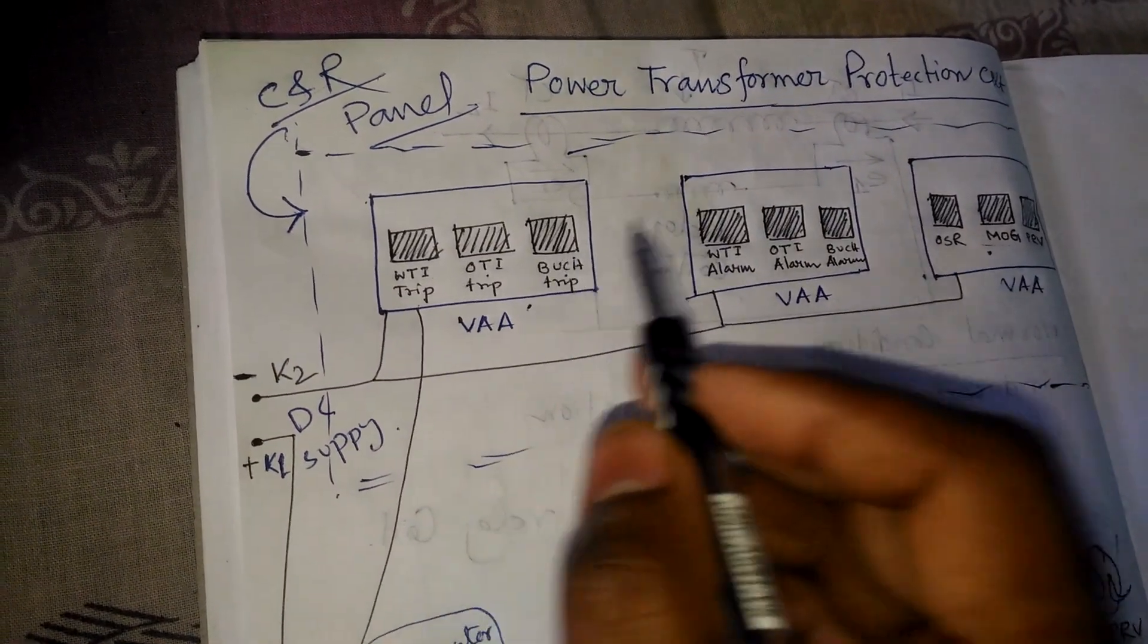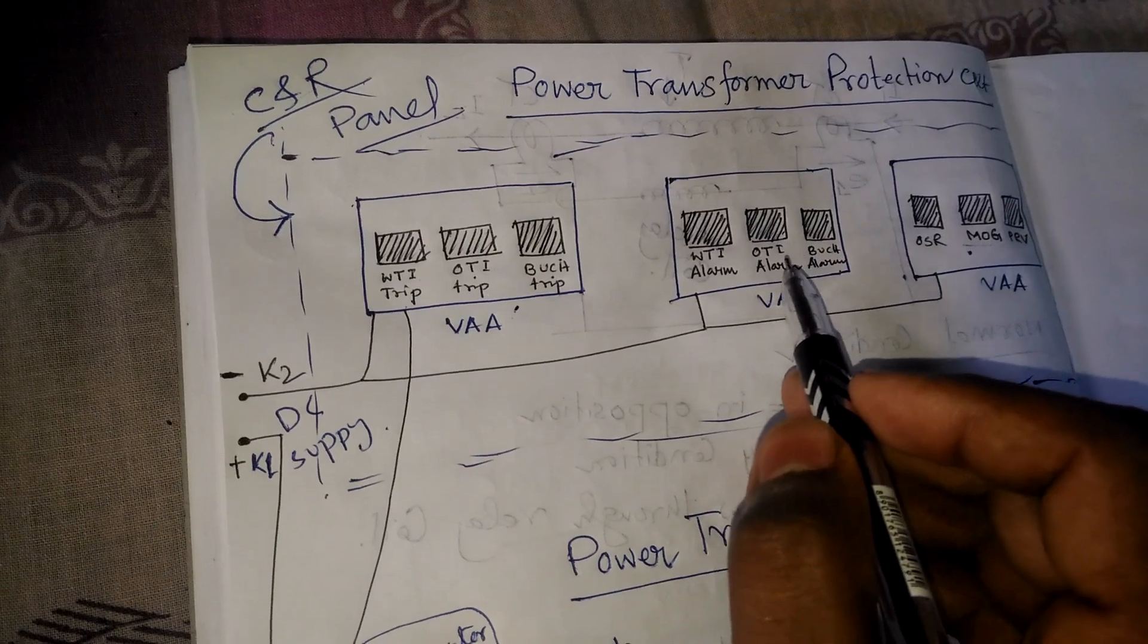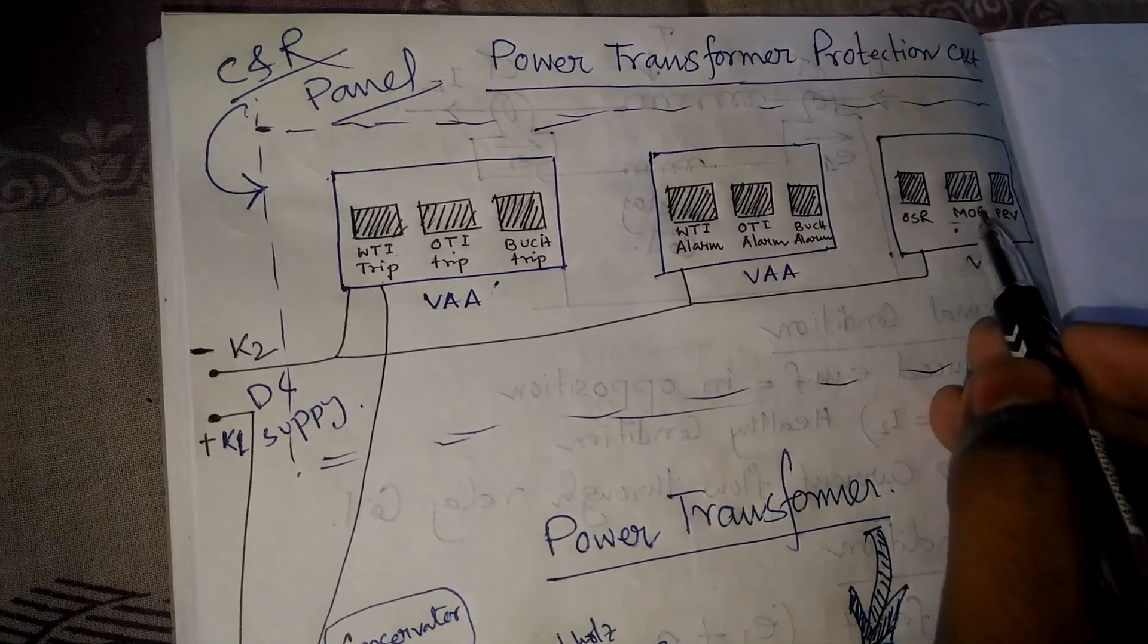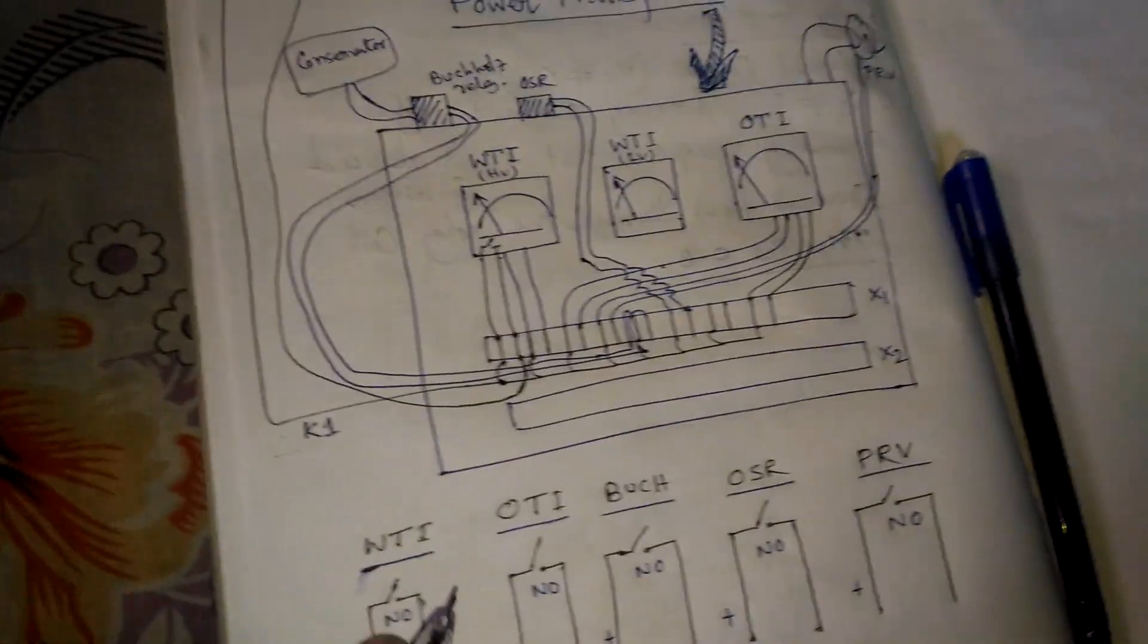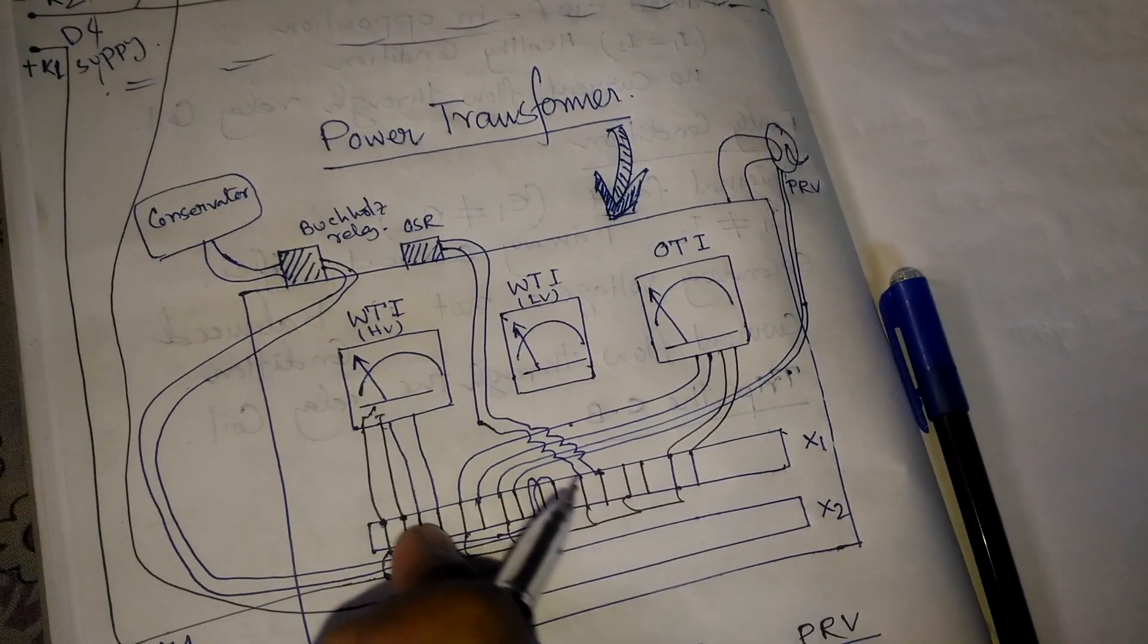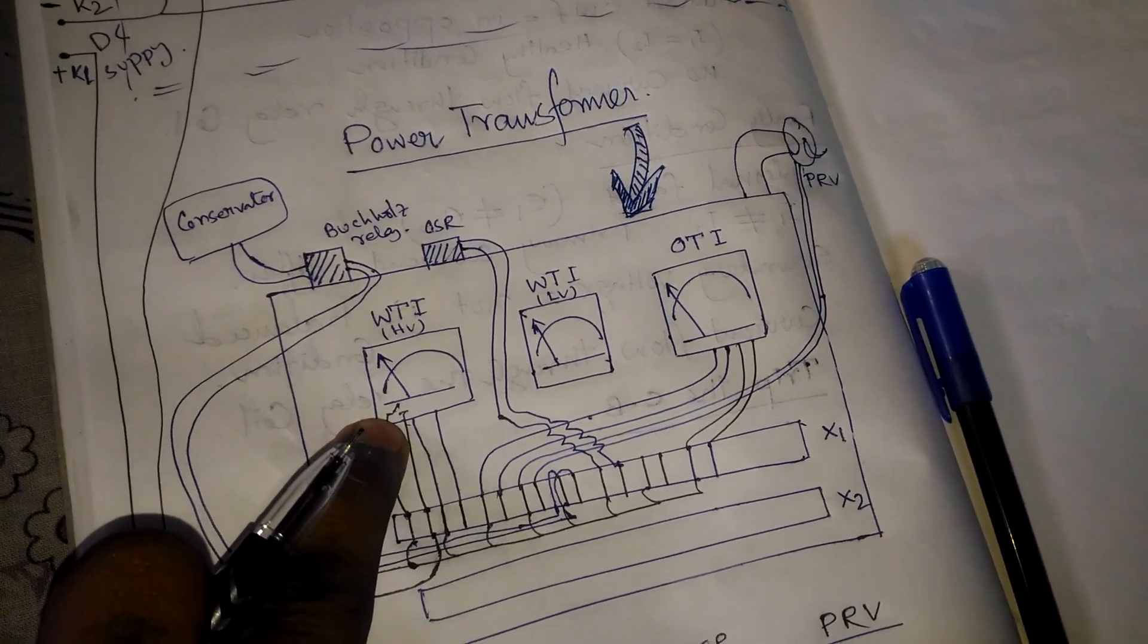In case of WTI, Buchholz, OTI alarm, all the path is the same. The positive starts here and comes back from another part after the NO contact converts to NC contact.